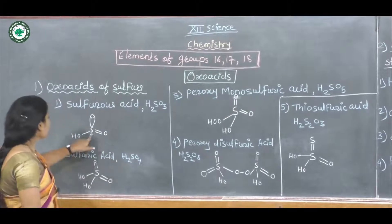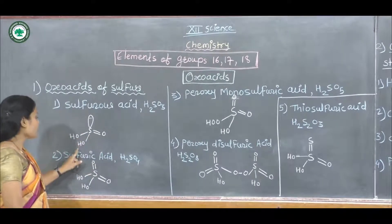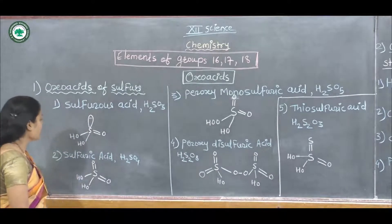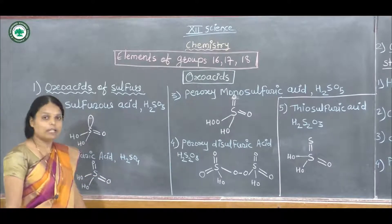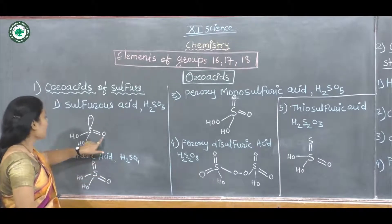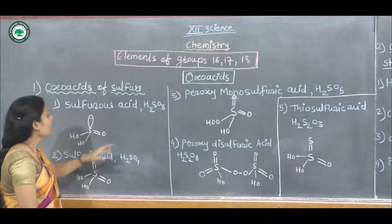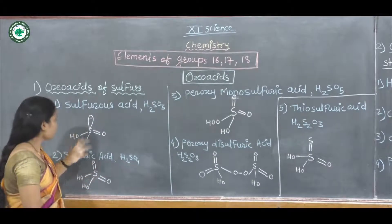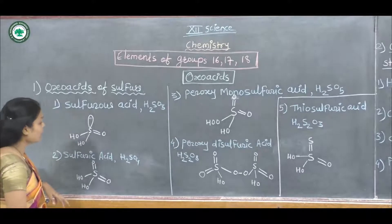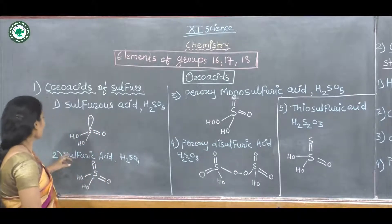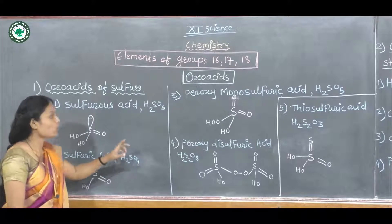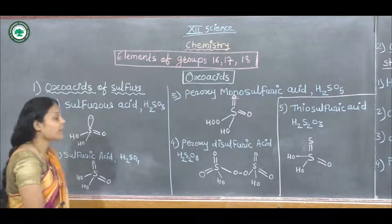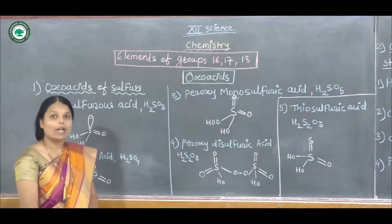Here is the structure of sulfurous acid. Sulfur has a double bond to one oxygen, and two HO single bonds are also attached to the sulfur. There are 3 oxygen atoms total, 1 sulfur atom in the middle, and 2 hydrogen atoms. The valency of sulfur is 6 and hydrogen is 2. This is the structure of sulfurous acid, and its formula is H₂SO₃.